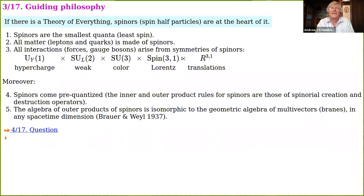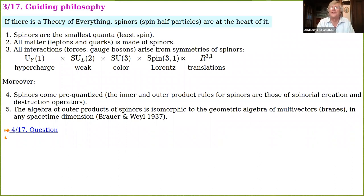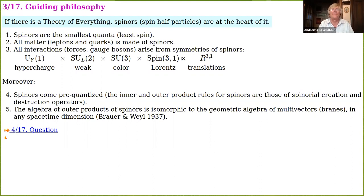Take a Dirac spinor — a spinor in 3+1 dimensions, a relativistic version of the Pauli spinor. The Dirac spinor contains four complex components, or equivalently eight real components. Those eight real components include six degrees of freedom, which precisely encode the six degrees of freedom of the Lorentz group. The two other degrees of freedom characterize the amplitudes of spinors and anti-spinors. So a Dirac spinor, aside from its amplitude, is simply a Lorentz gyroscope — it contains within itself all that is needed to understand the structure of space-time.